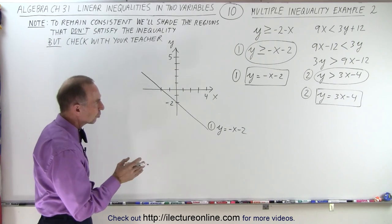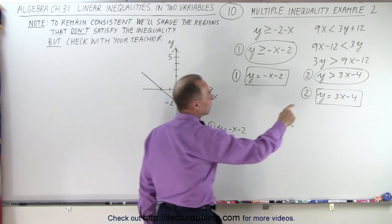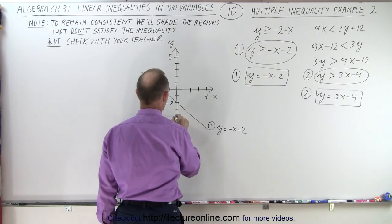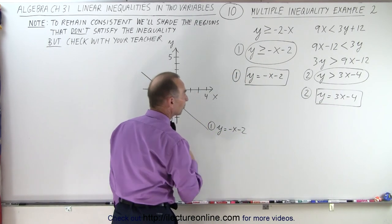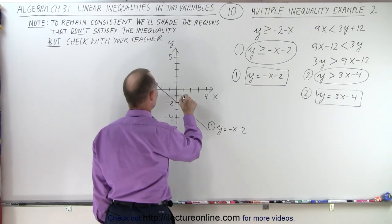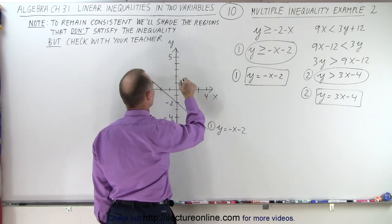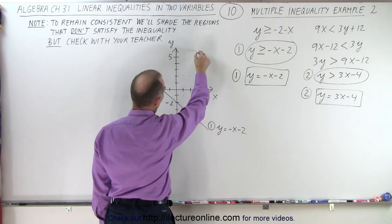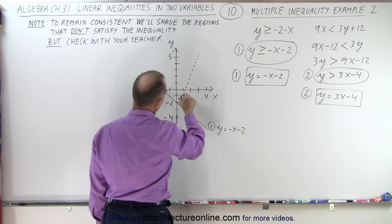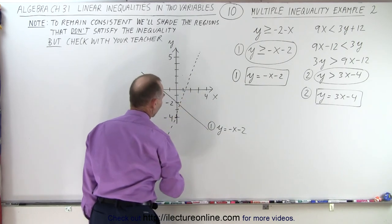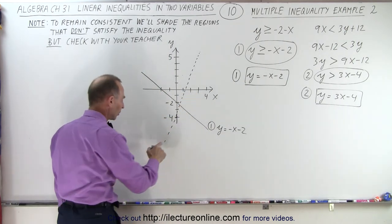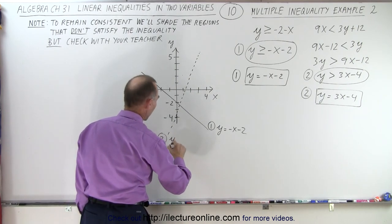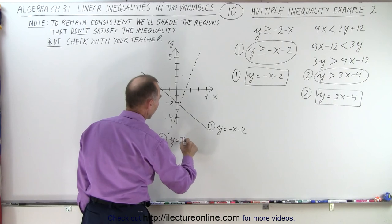The second line is going to be a dashed line because we don't have an equal symbol here. The intercept is -4, right here at -4, and the slope is +3. So up 3, over 1, up 3, 1, 2, 3, over 1, so it kind of looks like this, and it's a dashed line. It doesn't have to be exactly accurate, just something that's close enough so we can work with it is good. So here's line number 2, and there we have y = 3x - 4.